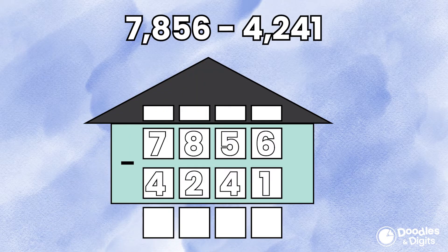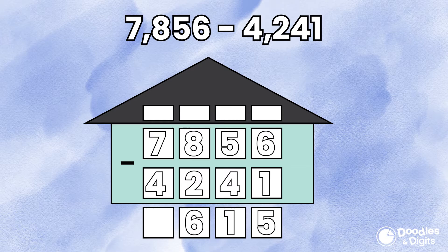7,856 minus 4,241. The first thing I'm going to do is put it in the place value chart. Let's subtract: 6 minus 1 equals 5, 5 minus 4 equals 1, 8 minus 2 equals 6, and 7 minus 4 equals 3. So our answer is 3,615.